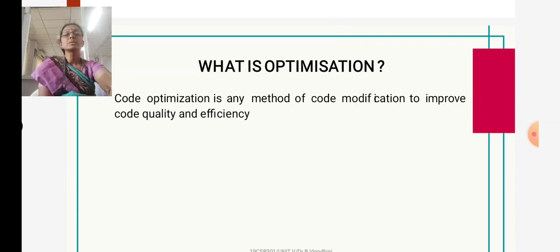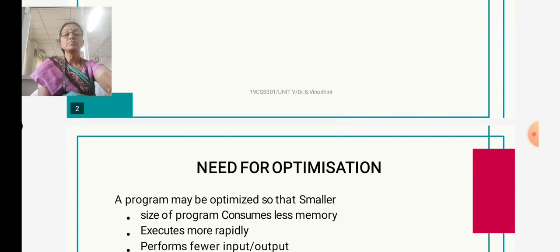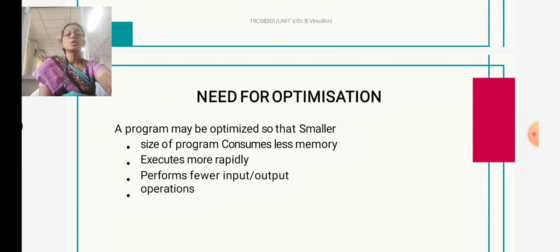Code optimization is a method of code modification to improve the code quality and efficiency. What we need from optimization is that the program will be optimized so that the size of the program is smaller, it executes more rapidly, and performs fewer input and output operations.